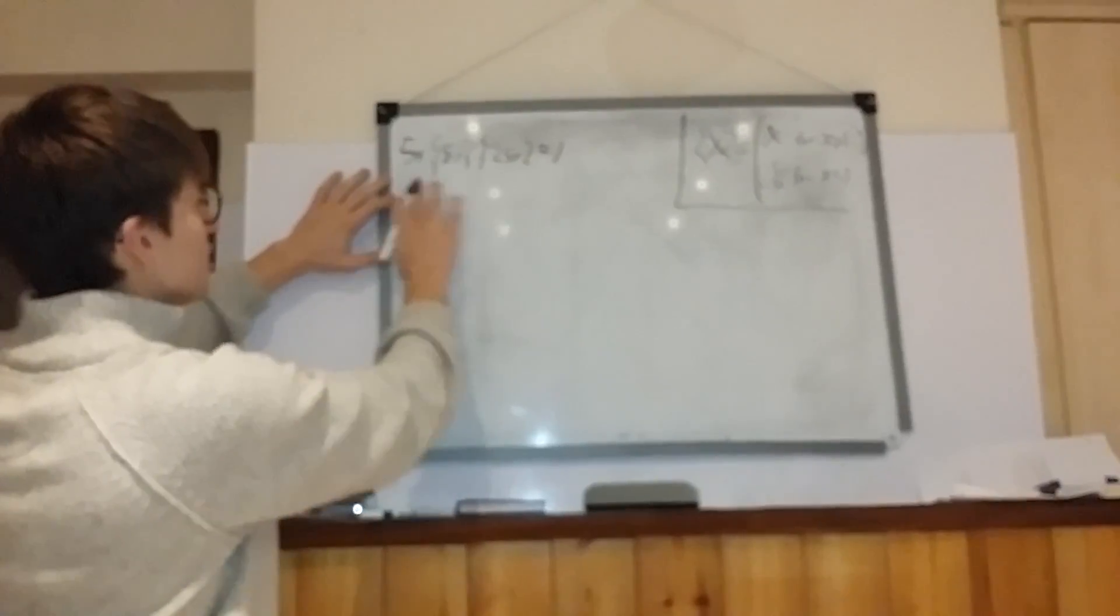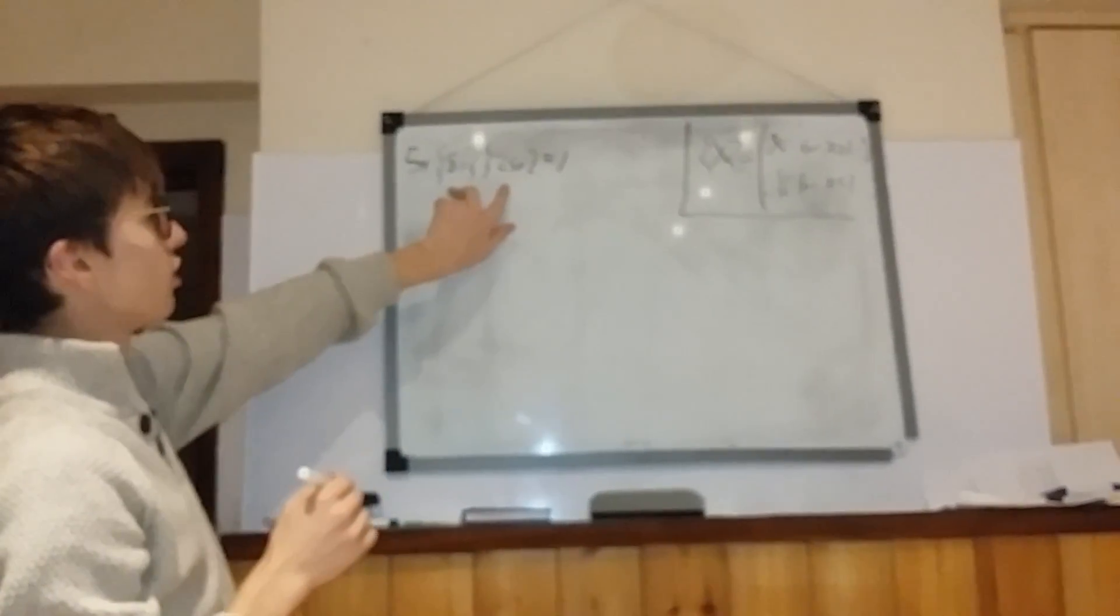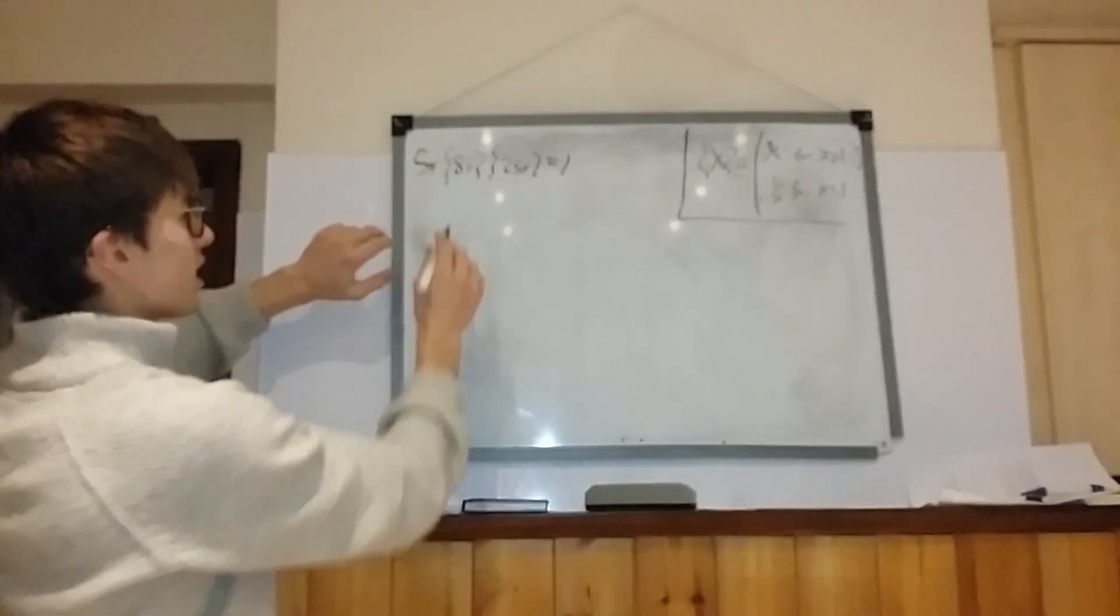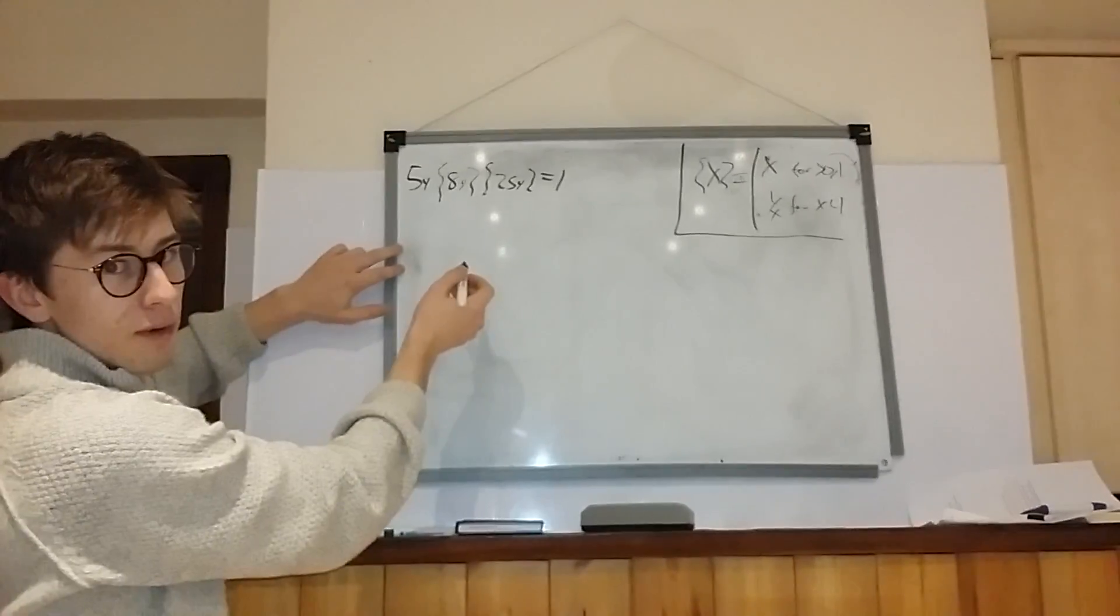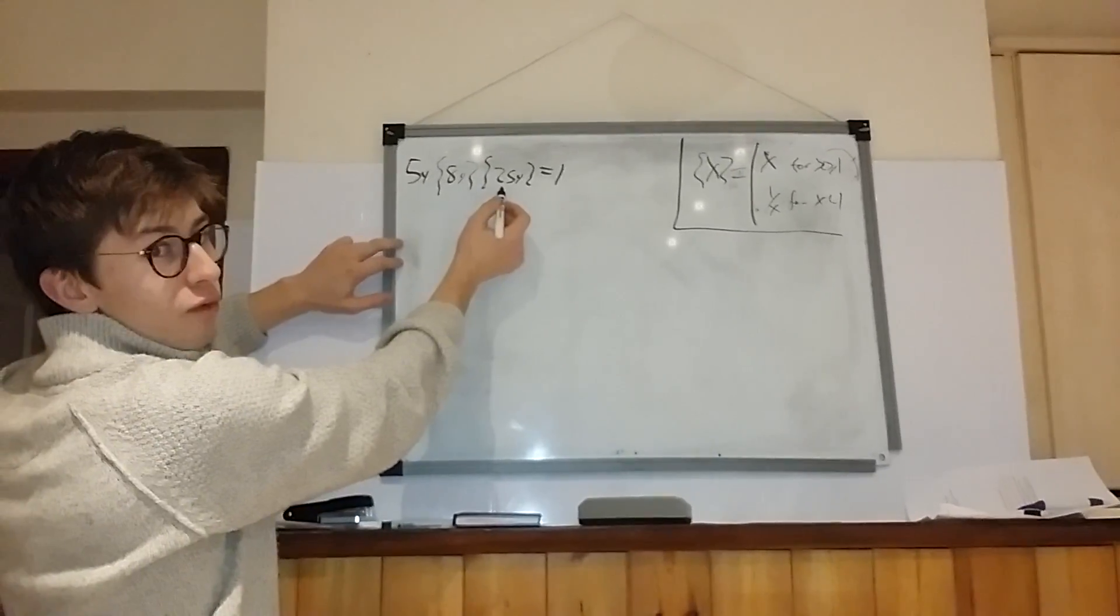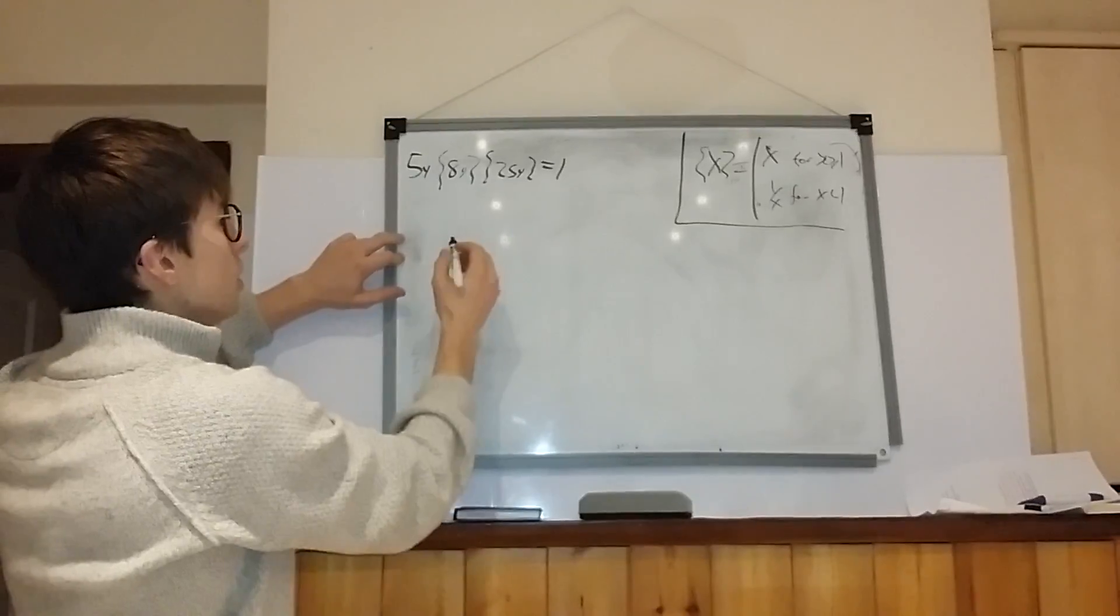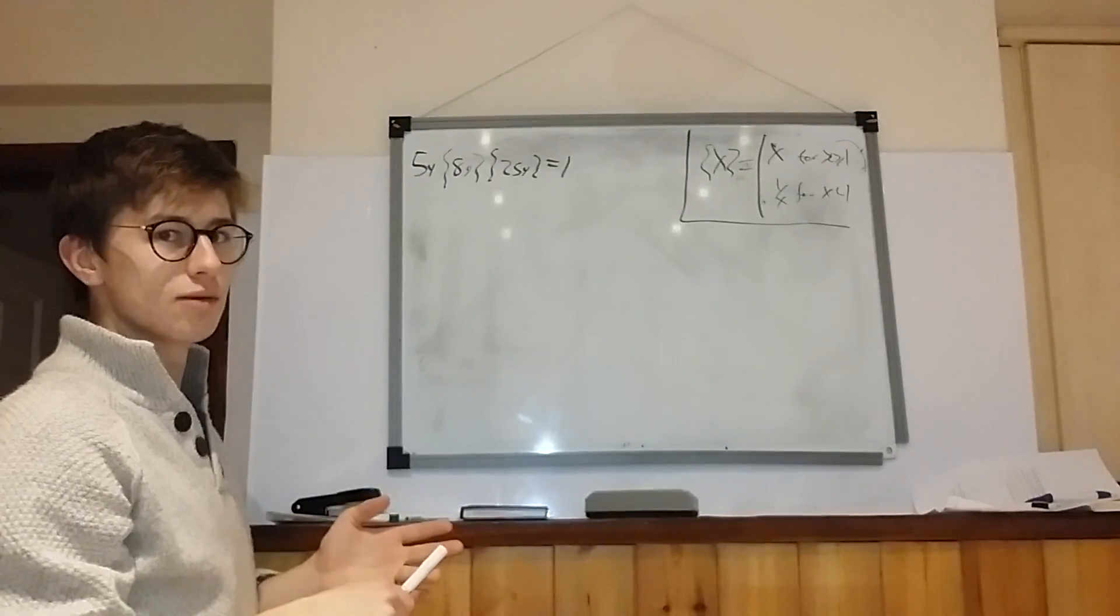So basically the trick is how you've got to look at what these can either be. So that can be either 8y or 1 over 8y. That can be either 25y or 1 over 25y. So you just look at the four separate cases and see which ones work.